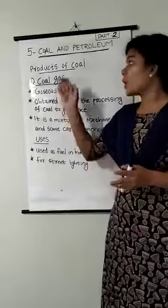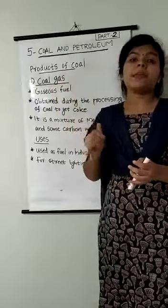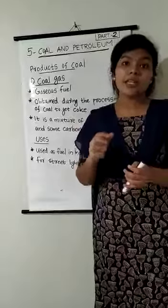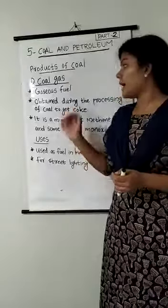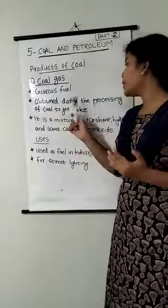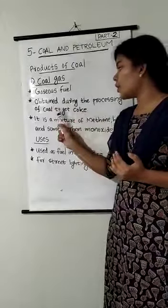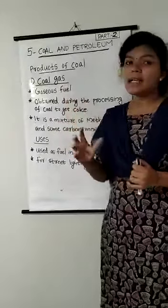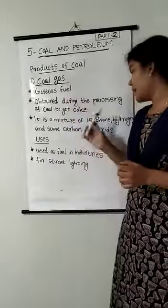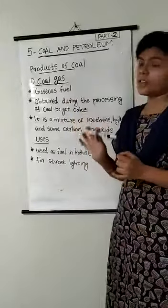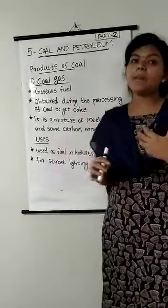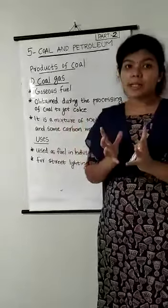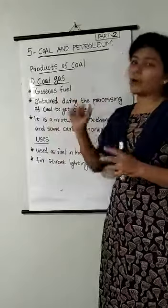The first one is coal gas. From the name itself we can say it is a gaseous fuel, and it is obtained during the processing of coal to get coke. Coal gas is a mixture of several gases like methane, hydrogen, and some carbon monoxide — a lot of gases together form coal gas.